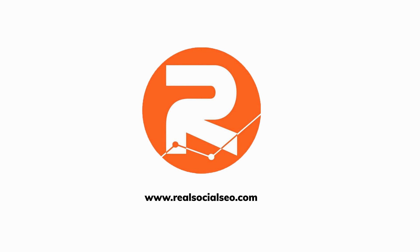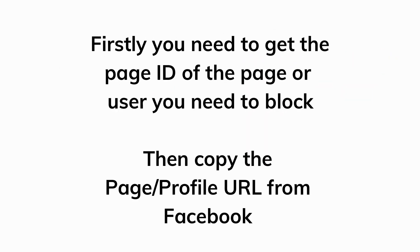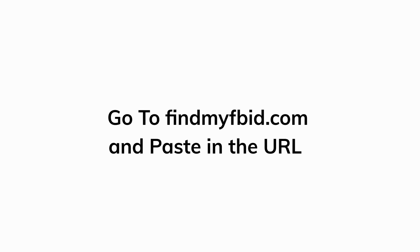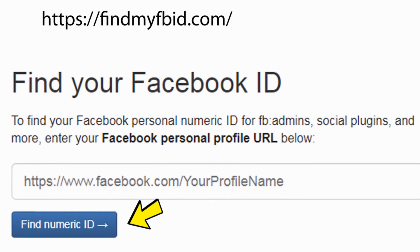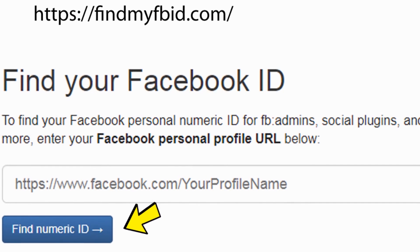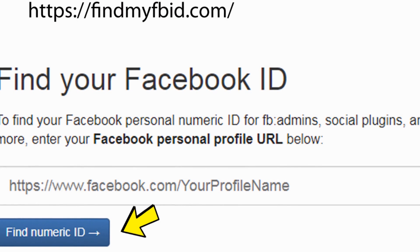If you need help with this, you can contact us via our website www.realsocialseo.com. To get started, you first need to obtain the page ID of the page or user you need to block. Then copy the page or profile URL from the address bar. Go to findmyfbid.com and paste in the URL you just copied. This will return the ID you need. There are other ways to obtain the ID numbers, but we find this is the most straightforward method.